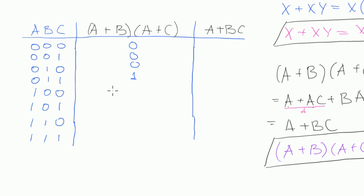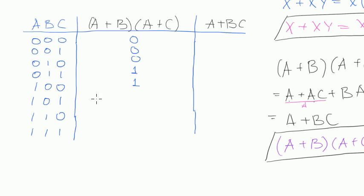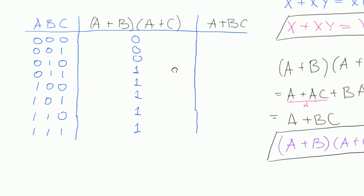Then the next one: a equals 1, everything else 0. If a equals 1, then both brackets will be 1, and the result will also be 1. And for all cases where a equals 1, we can see that these two brackets will be 1 for any values of b and c — so the whole expression equals 1.